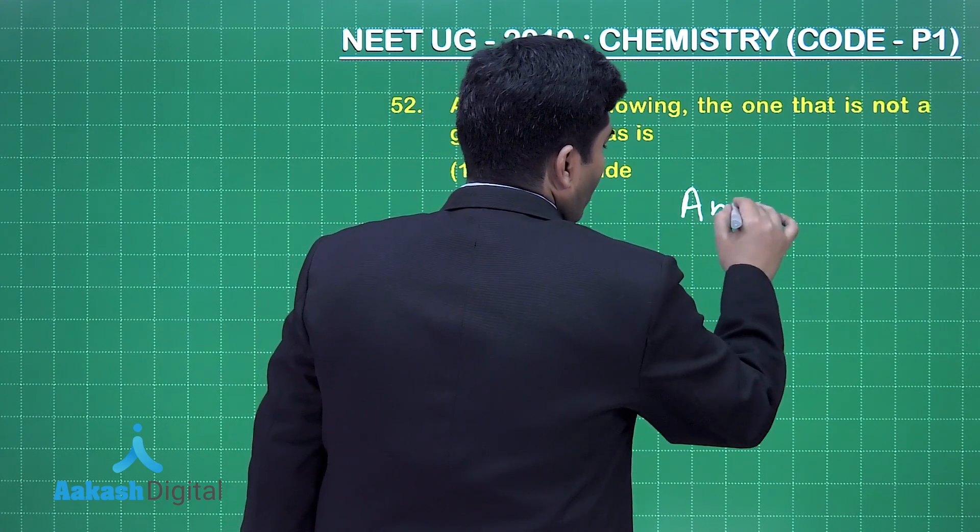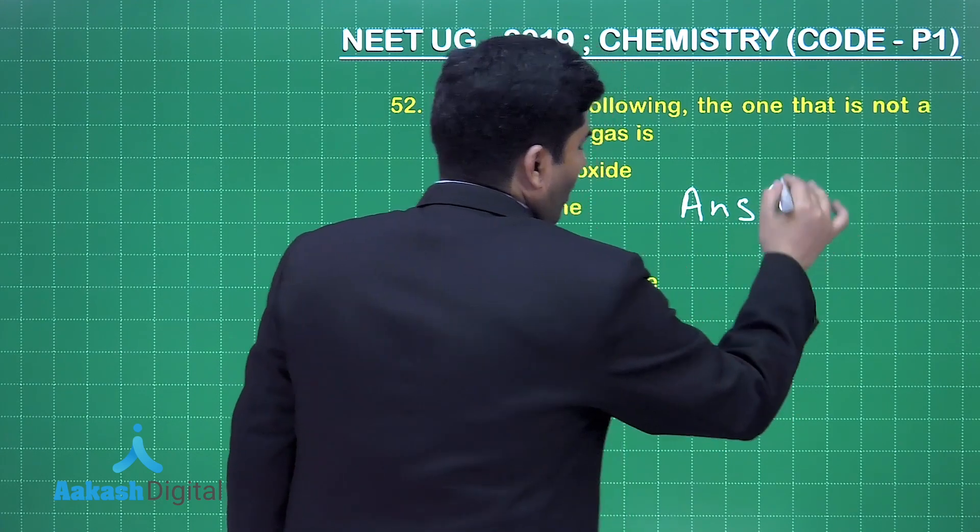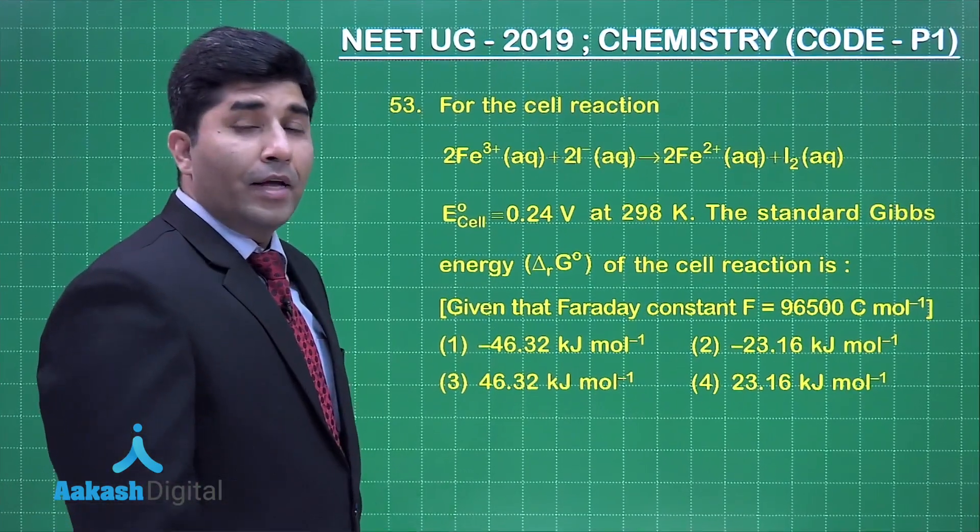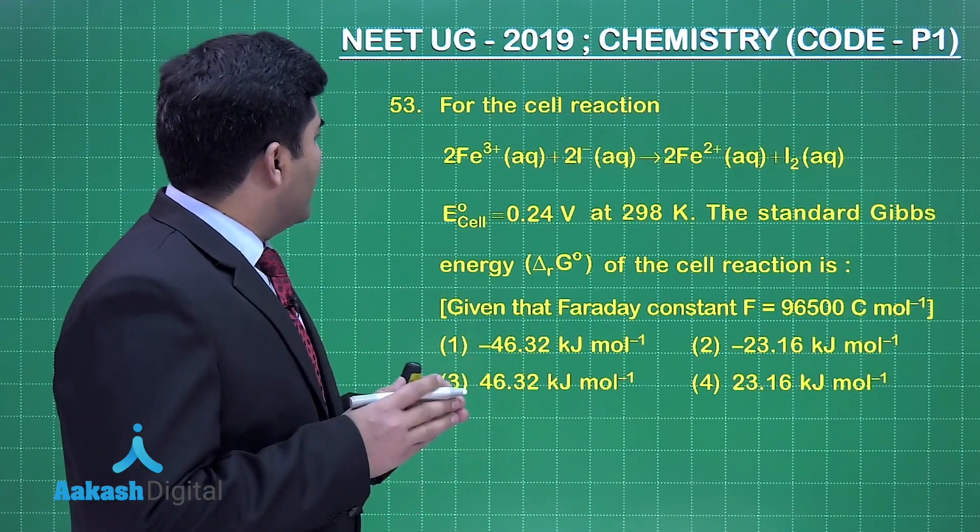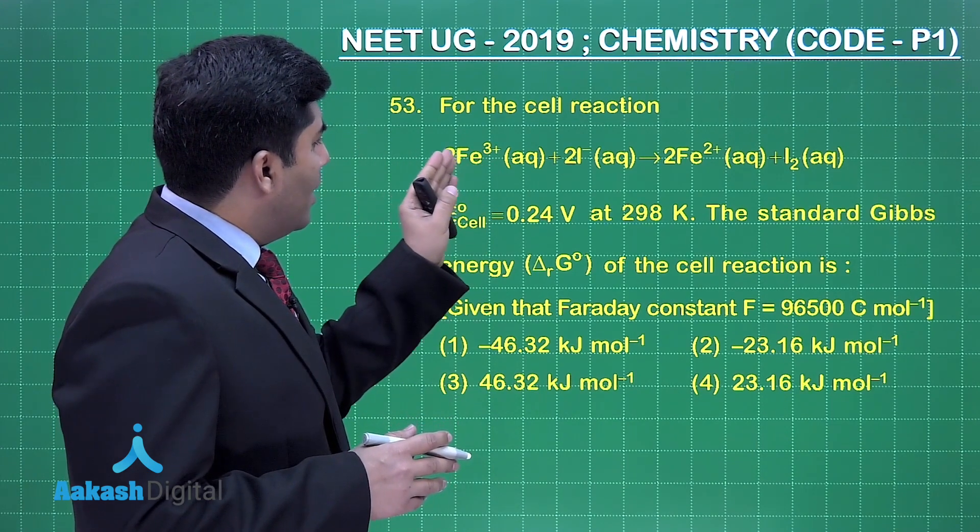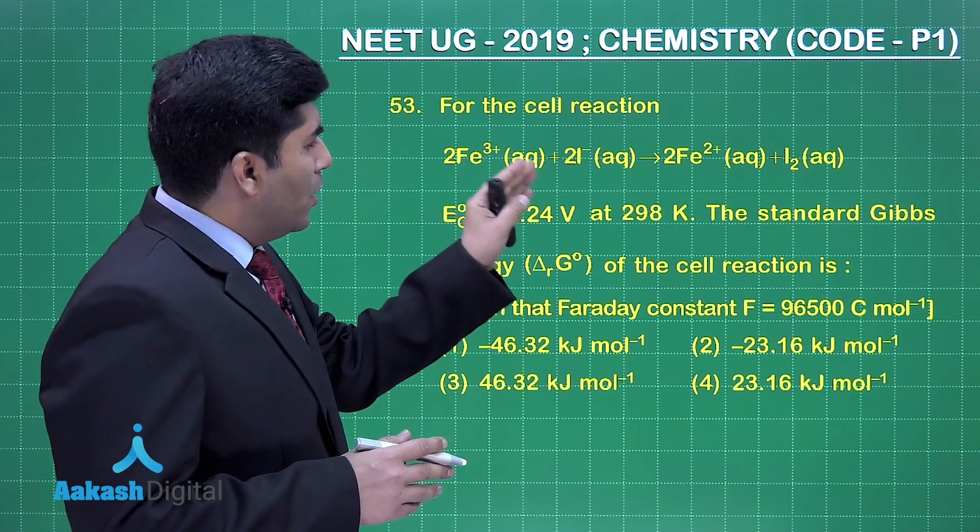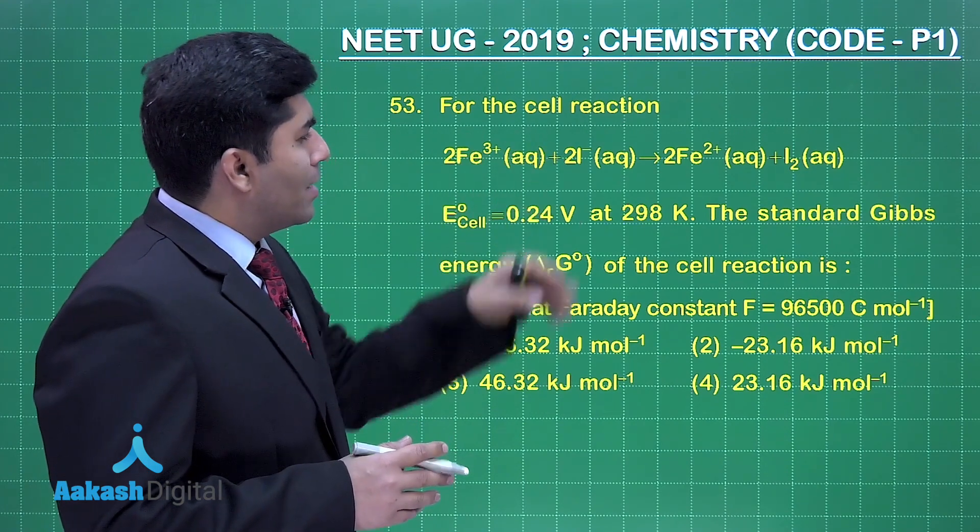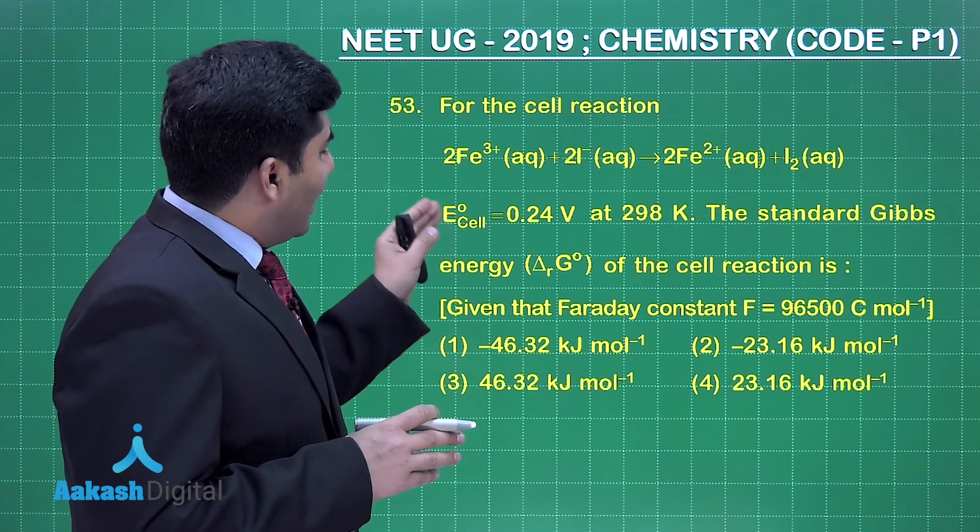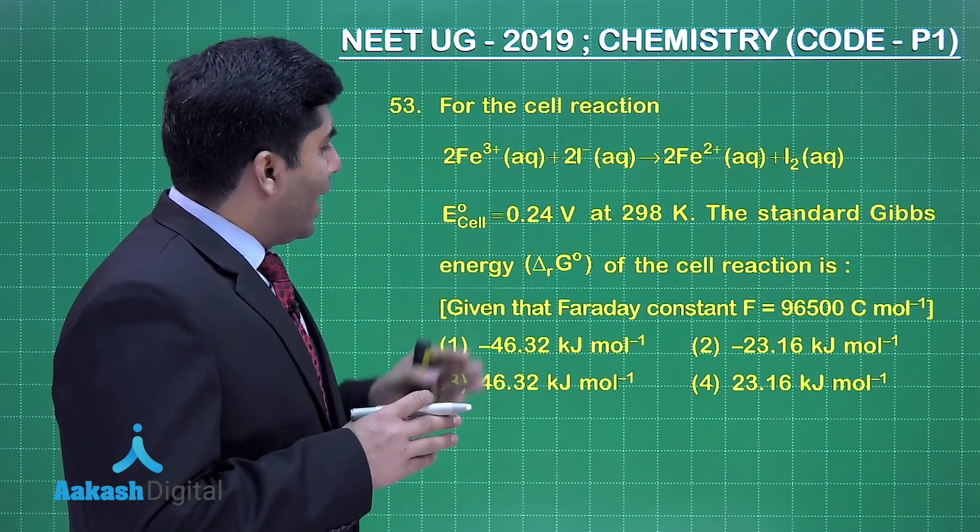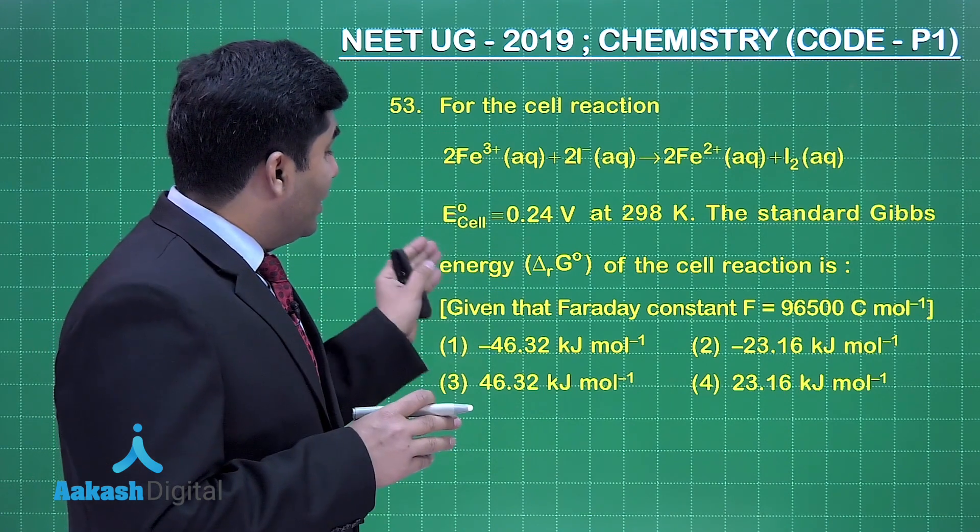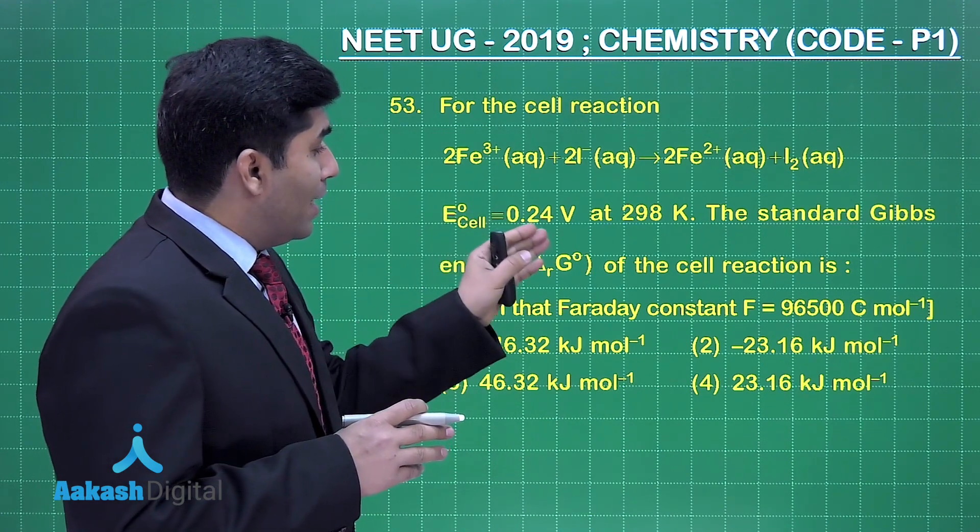So the answer is option number 4. Let's move on to the next question. Now, for the cell reaction, 2Fe³⁺(aq) + 2I⁻(aq) → 2Fe²⁺(aq) + I₂(aq). This is a cell reaction. E°cell is given, that is 0.24 volt at 298 Kelvin. The standard Gibbs energy ΔG° of the cell is being asked.